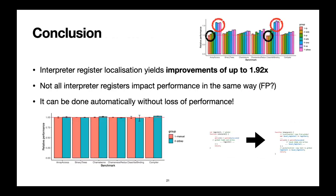So for some conclusions: with this optimization we have an improvement of almost 2x, which is good. Not all configurations and register combinations have the same performance — there is something worth investigating there. And we were able to do it automatically, which is very good.